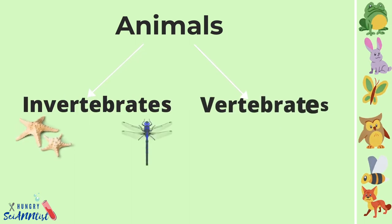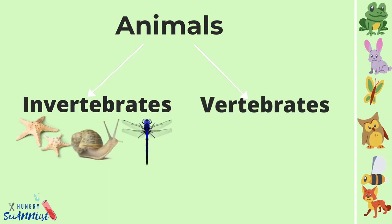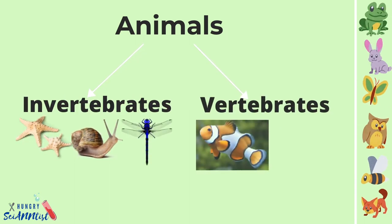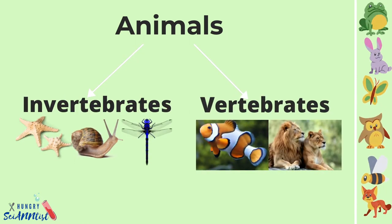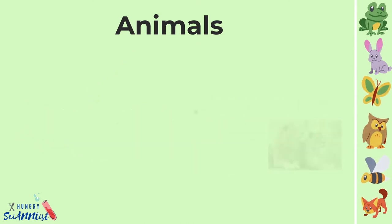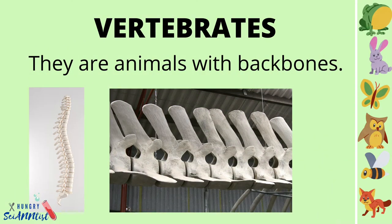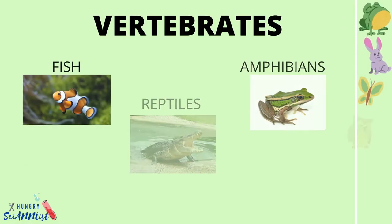Animals are divided into two groups: invertebrates and vertebrates. Vertebrates are animals with backbones.